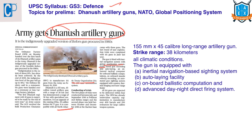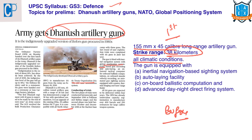Dhanush is the first indigenously built 155mm by 45 caliber long-range artillery gun with a strike range of 38 kilometers. These are improved versions of Bofors guns acquired by India between 1987 and 1991. Dhanush is a versatile weapon that can operate in all climatic conditions. It is equipped with a navigation-based sighting system, auto-laying facility, onboard ballistic computation, and an advanced day-night direct firing system.